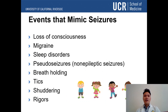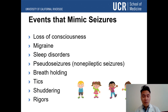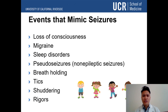There are a lot of events that mimic seizures. A child could have a loss of consciousness, potentially a migraine. They could also have sleep disorders or parasomnias, pseudo seizures — which are non-epileptic seizures that look like seizures but aren't. Some children do breath-holding when they're angry or emotionally charged, which may make you think they're having a seizure. Tics, shuddering, and rigors can also look like seizures.